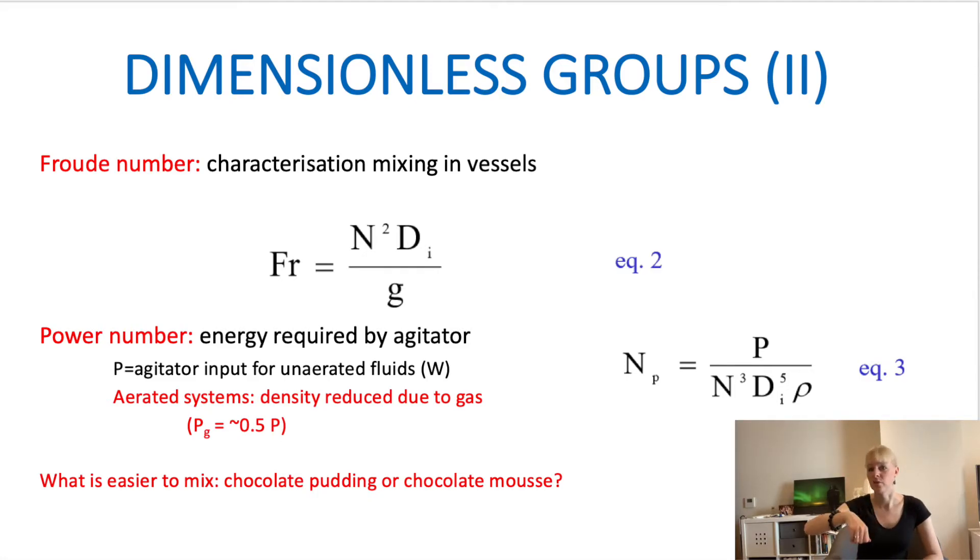So this is the example where you look at chocolate pudding versus chocolate mousse. The mousse will obviously be easier to mix because you've got the bubbles in there. And in a bioreactor you will see something very similar.